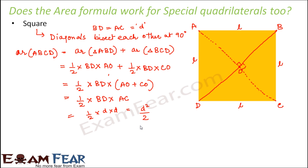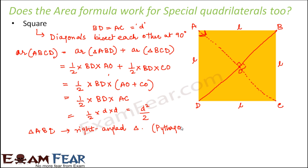Now we want to verify that this equals side squared, that is L squared. Looking at triangle ABD, we see that angle A is 90 degrees, which means triangle ABD is a right-angled triangle. We can apply the Pythagoras theorem: hypotenuse squared equals sum of squares of the other two sides. The hypotenuse is BD, since it lies opposite the right angle at A. So BD squared equals AD squared plus AB squared.